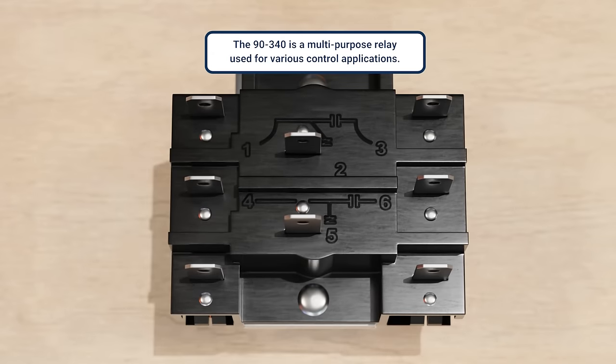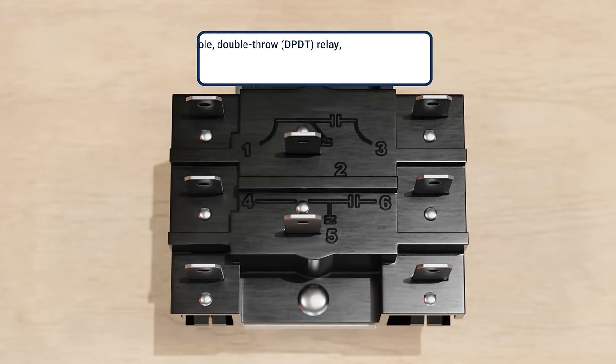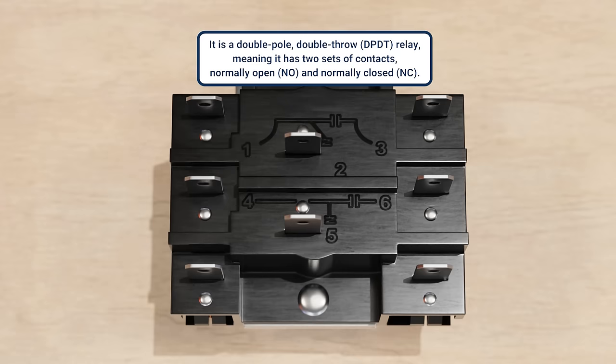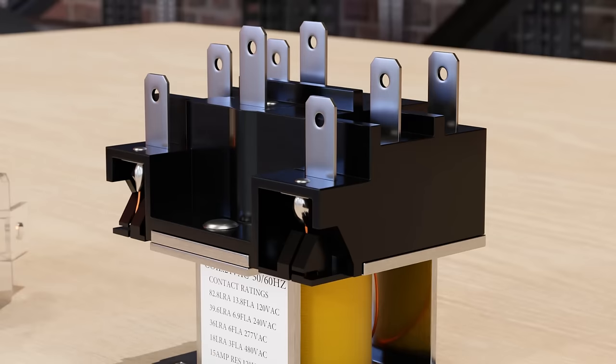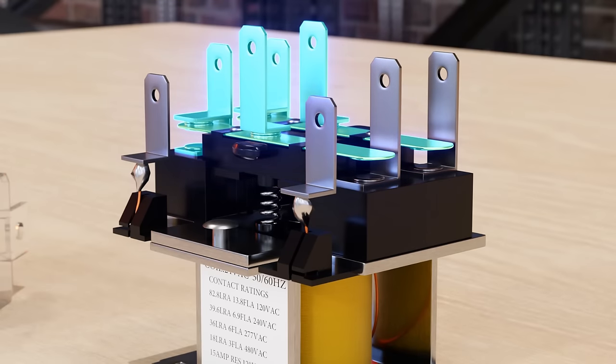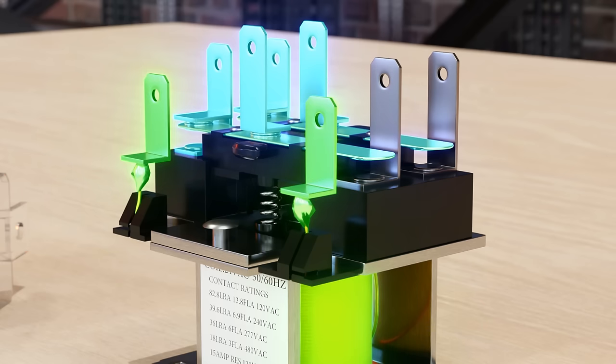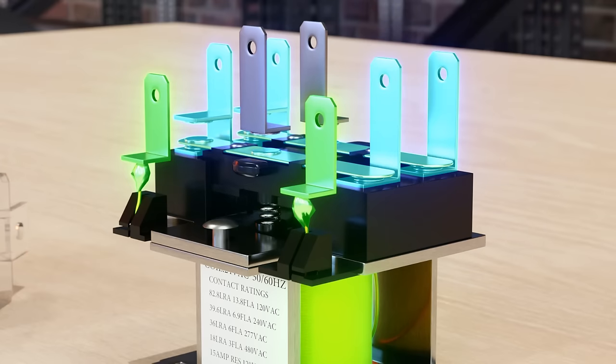It's a multipurpose relay and it's used for various control applications. The 9340 is a double-pole, double-throw, or DPDT relay, meaning it has two sets of contacts, normally open and normally closed. At its core is the electromagnetic coil, usually rated at 24 volts. When energized, it creates a magnetic field pulling the switch contacts to change the states of the contacts.